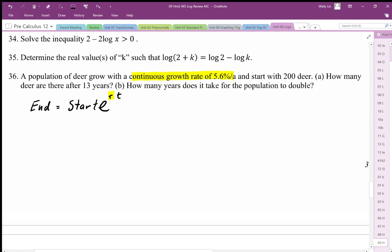We use the e form of this. I'm going to write this so it looks a little bit neater: start times e to the r times t power. And r represents the continuous growth rate.